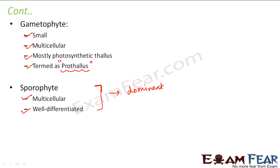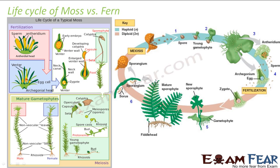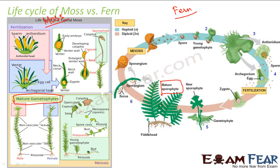Let us have a quick comparison between the life cycles of a moss and a fern. In moss, which is a bryophyte, the gametophyte is the dominant phase — it is the long-lived plant we see. Whereas in a fern, the sporophyte is the dominant phase and is the long-lived plant we see.